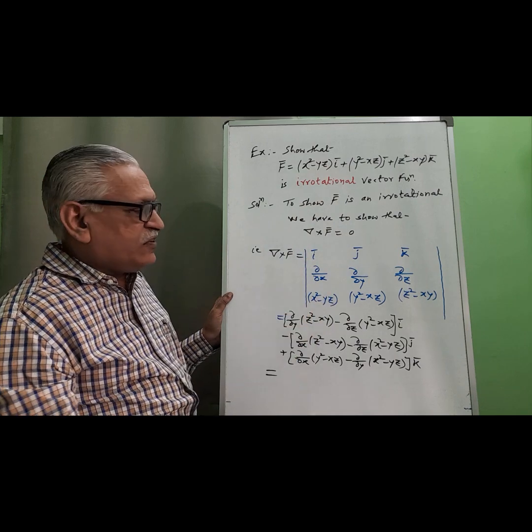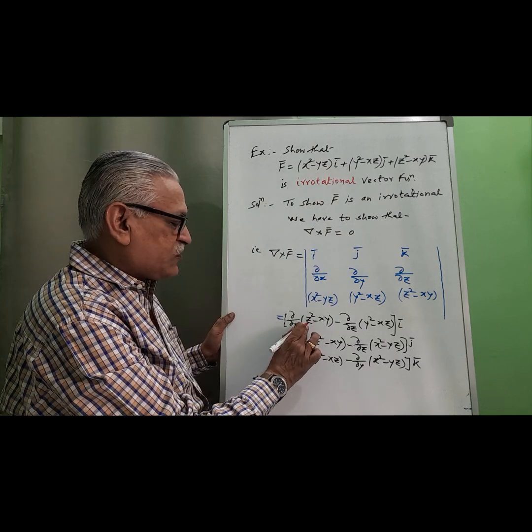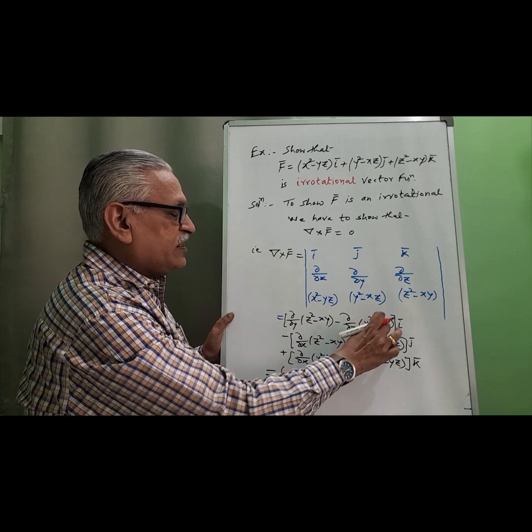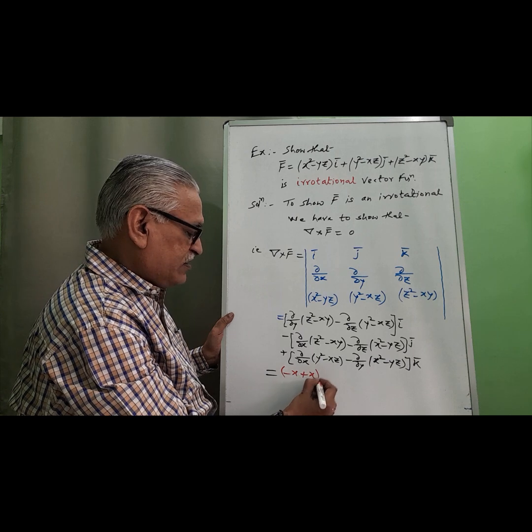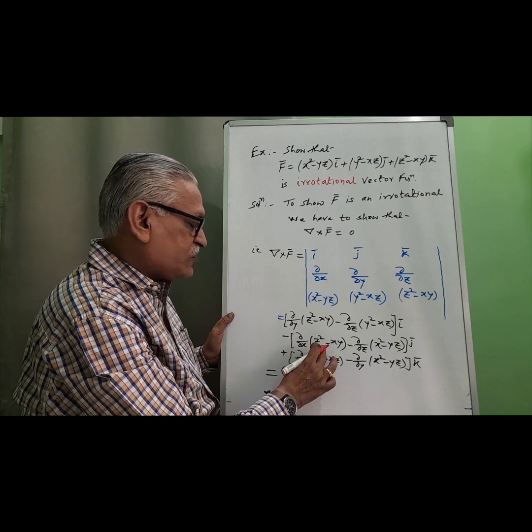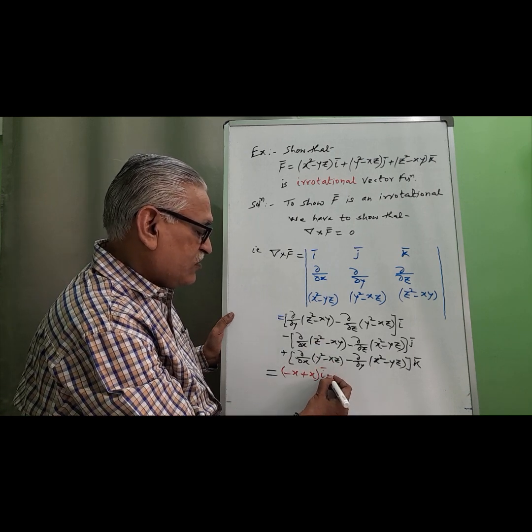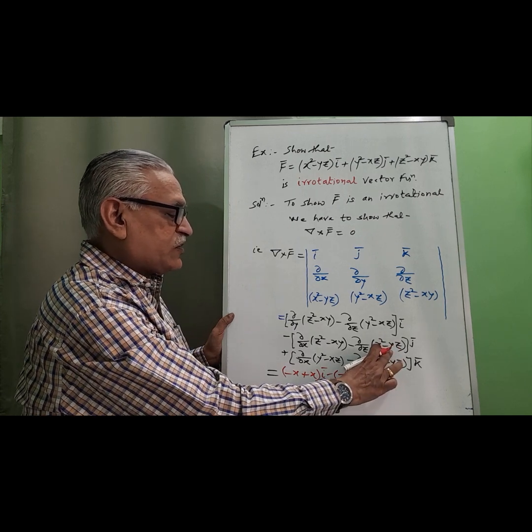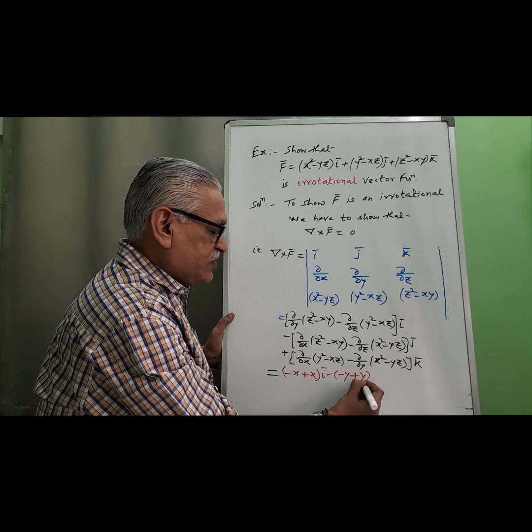Then evaluating this, we have this term with respect to y is minus x. Differentiating this with respect to z, minus minus minus it becomes x into i. With respect to x, we have minus y minus. Differentiating this with respect to z is y into j.